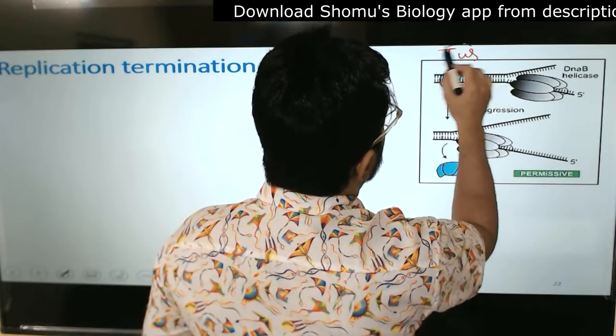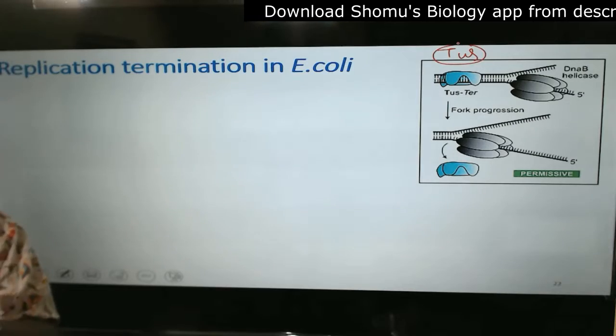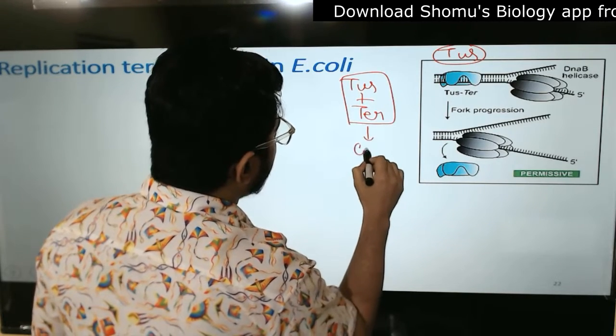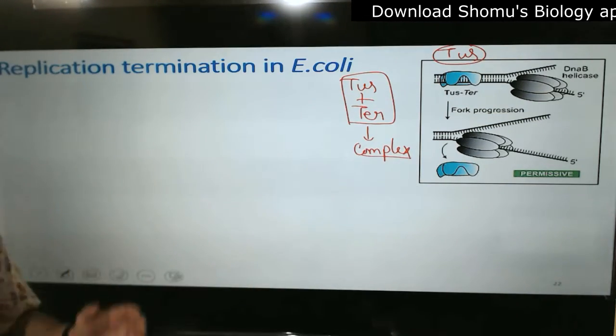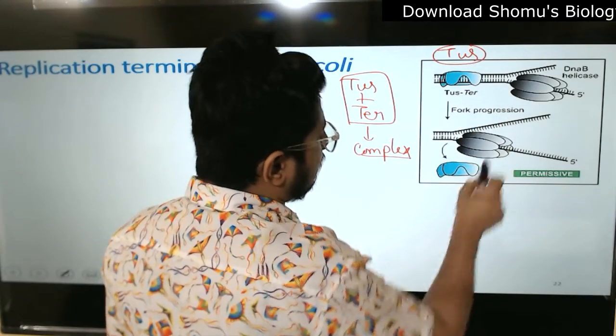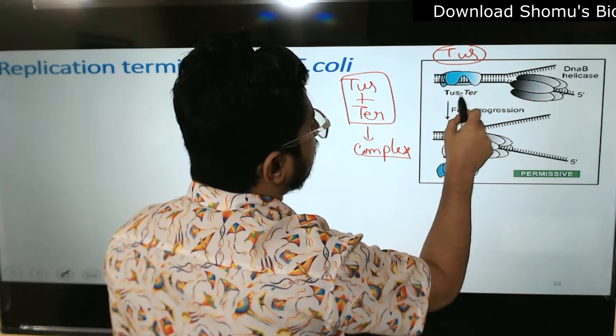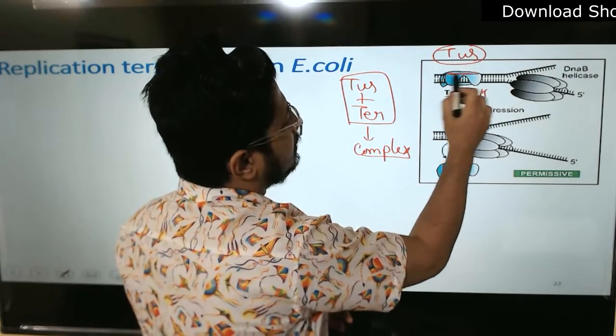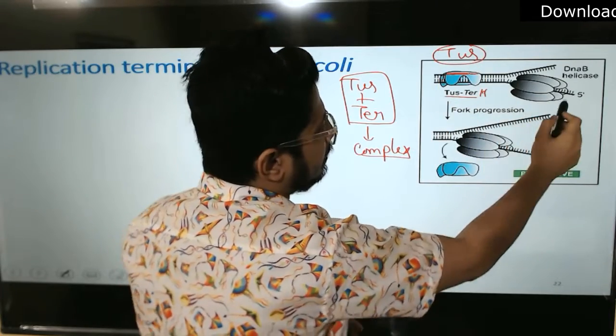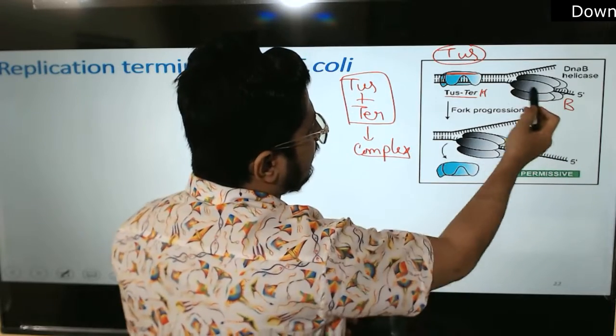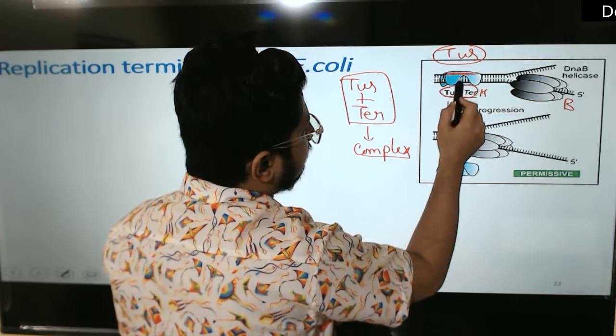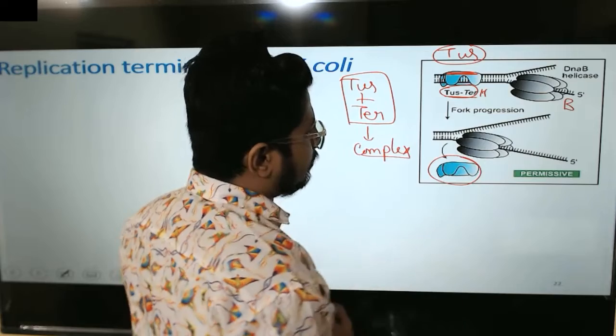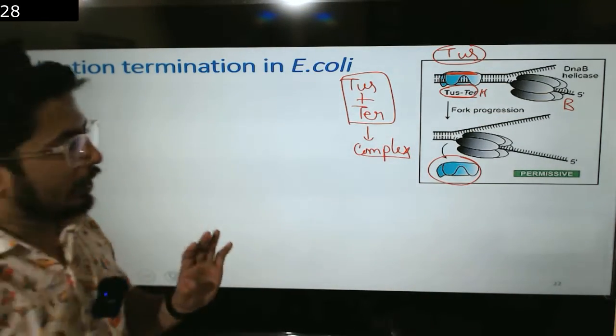We need a special protein known as Tus protein, which will actually prevent the movement of a fork. Tus proteins can always interact with ter sequence, forming Tus-ter complex. This is one example when we see that Tus protein is loaded to, let's say, ter H. Tus protein is loaded from which side? The strand in the above. Helicase is loaded strand to the bottom.